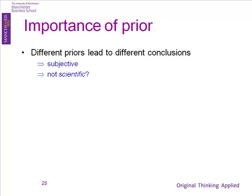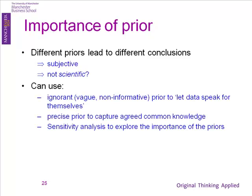Coming back to that prior — different priors lead to different conclusions. That was always considered subjective, not scientific. But you can get round that. A lot of people tried to define complete ignorance, saying that for an objective scientific analysis you shouldn't put the actual experimenter in, but rather a completely ignorant scientist, and see what somebody completely ignorant would learn from that experiment — the objective evidence that came out of the data. The catch is, it really is difficult to be completely ignorant.